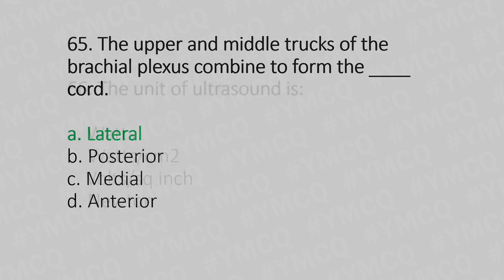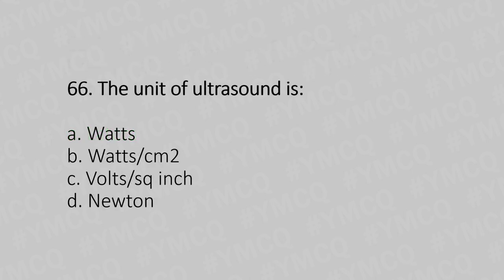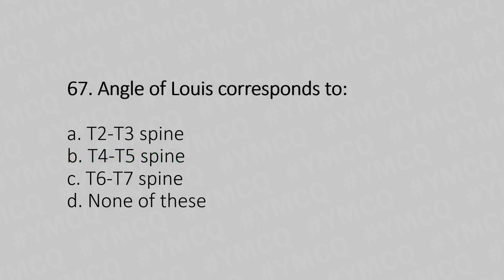Question 66: The unit of ultrasound is — Option A: watts, Option B: watts per centimeter square, Option C: volt square inch, Option D: newton. Question 67: The apex of the heart is at — Option A: T2 to T3 spine, Option B: T4 to T5 spine, Option C: T6 to T7 spine, Option D: none of these. The answer is Option B, T4 to T5 spine.